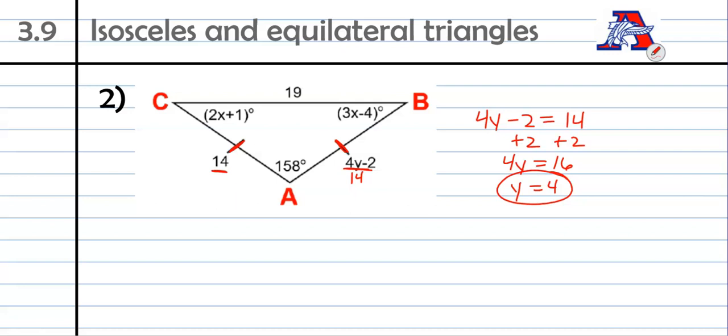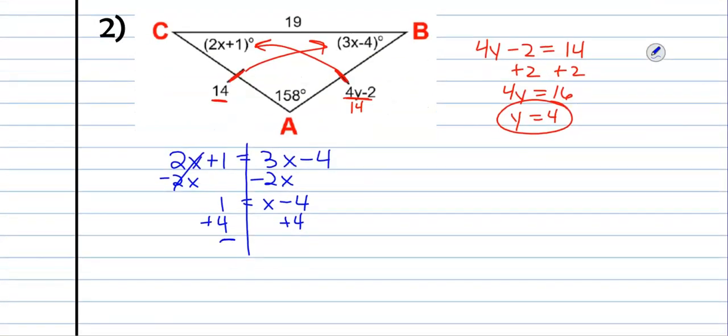Now we have to figure out what these angles are or what the x's are there. Well, since those angles are crossed from congruent sides, we know that they're equal to each other. So we now know that 2x plus 1 has to be equal to 3x minus 4. And then solve that. So I'm going to start by subtracting 2x from both sides. I'm going to add 4 to both sides. And there we go. We got x by itself. 5 is equal to x or x equals 5.